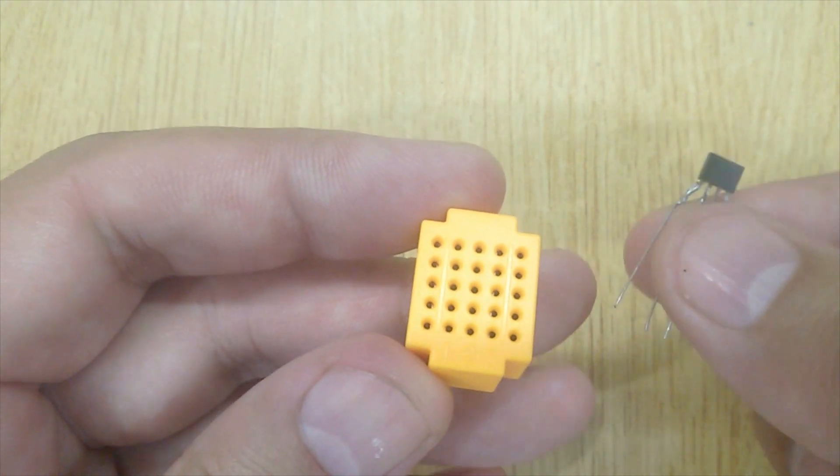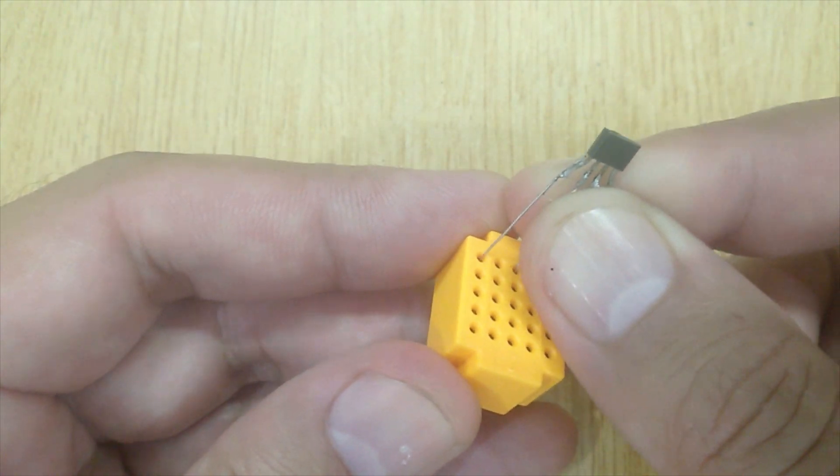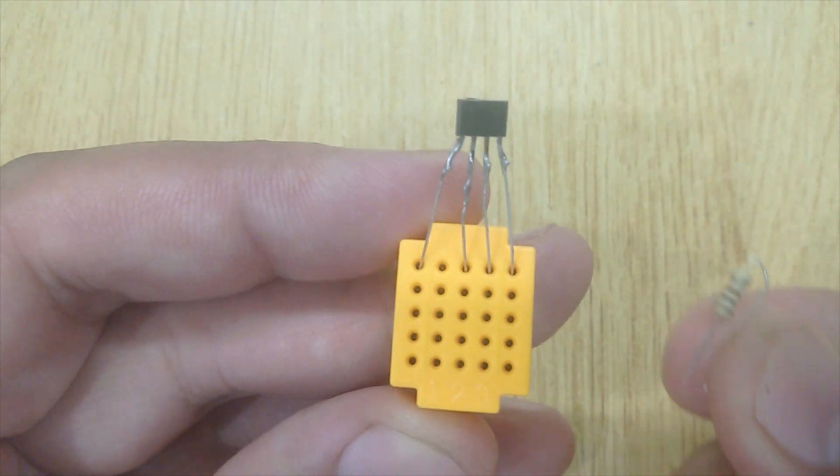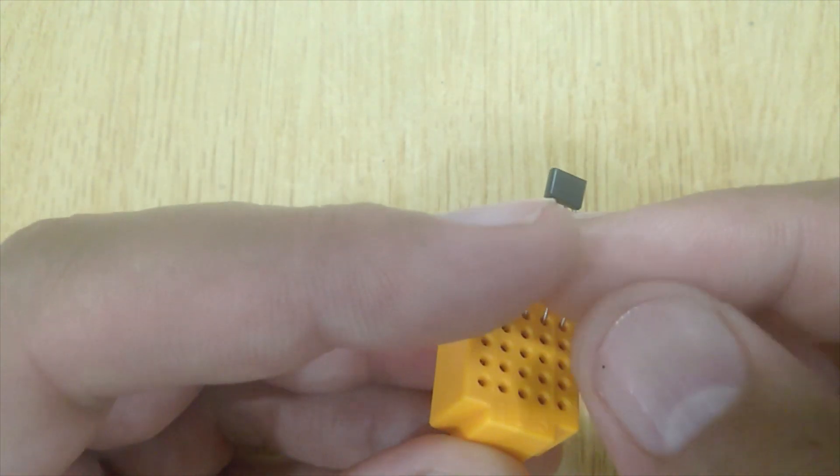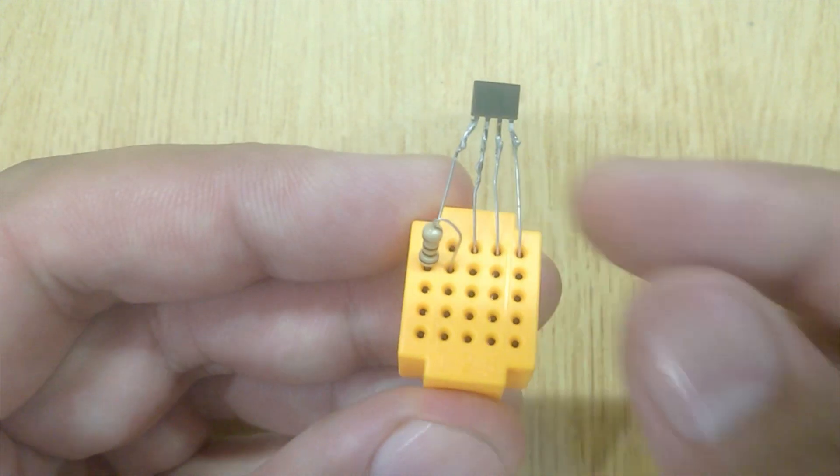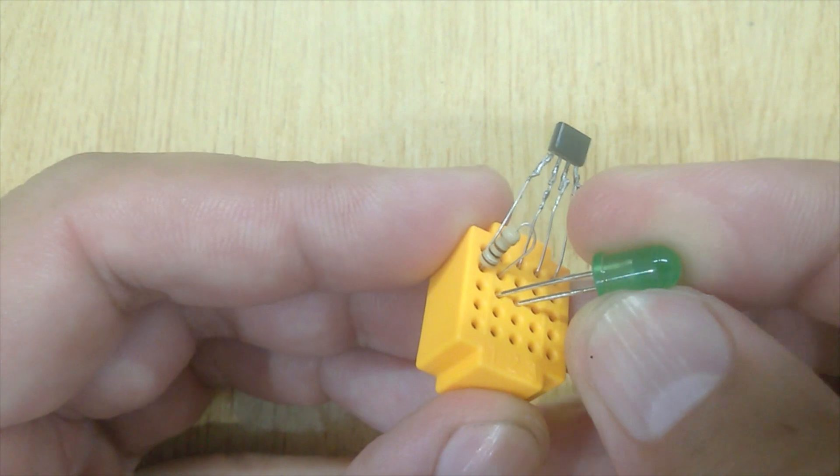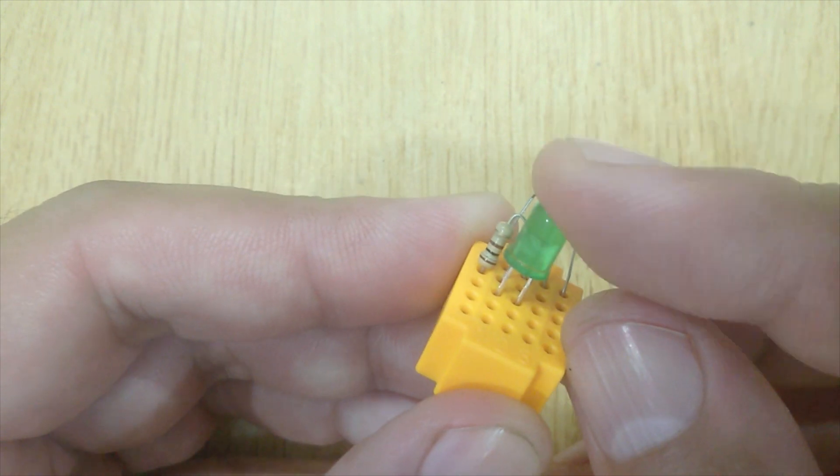Now let's get started. Get a micro breadboard and insert a hall effect sensor in it like this. After that connect a 100 ohms resistor with the first pin of hall effect sensor. And now connect the positive pin of green LED with the resistor and the negative pin of green LED with the second pin of hall effect sensor.